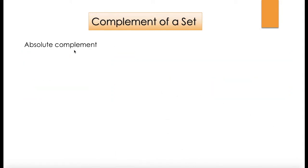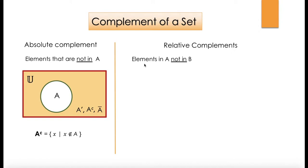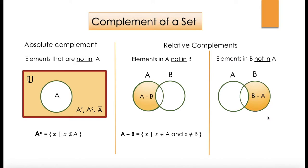For complement, we have absolute complement — elements that are not in A. If this is set U and this is A, the shaded portion gives us the complement of A, written as A prime, A to the power of C, or A with a bar on top. A complement is X such that X does not belong to A. For relative complements, we have two types: A minus B — elements in A that are not in B — where X belongs to A and X does not belong to B. Similarly, B minus A gives us elements in B not in A, where X belongs to B and X does not belong to A.